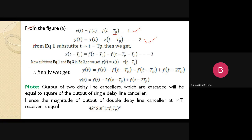Where t is available we replace with (t − Tp) to get equation number three. Now substituting equation one and equation three into equation two, we get y(t) = x(t) − x(t − Tp). Since x(t) is equation one and x(t − Tp) is equation three, substituting we finally get: y(t) = f(t) − 2f(t − Tp) + f(t − 2Tp). This is the final response of the double delay line canceller system.